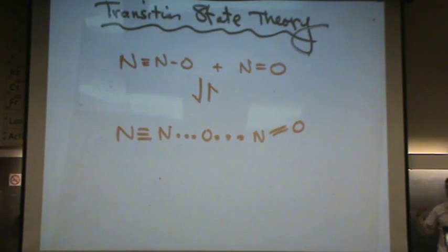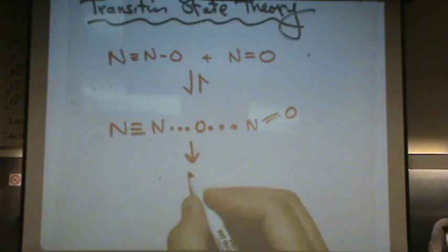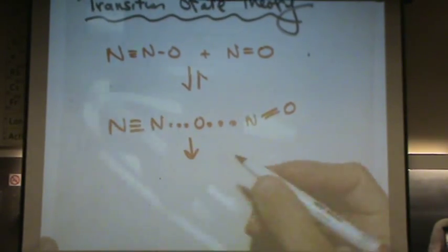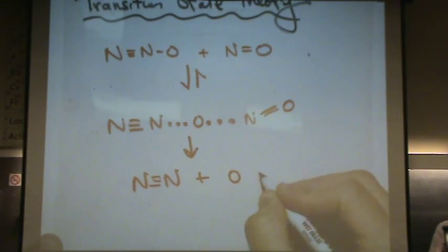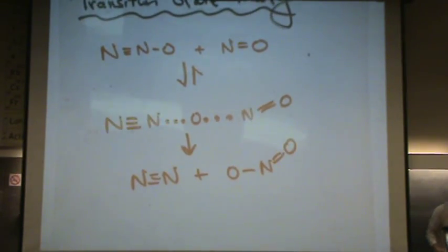If it decides to do so, it will completely go all the way. So, I'll show a single headed arrow here to form, as we saw earlier, the N2 plus the O and O. If it decided it didn't want to go, it would go back to the original reactants. Let's call it transition state theory.